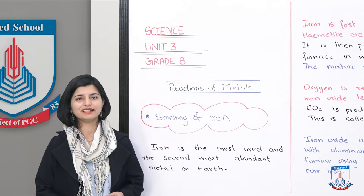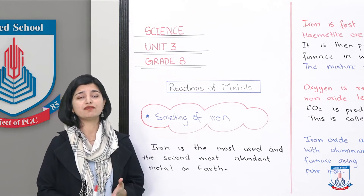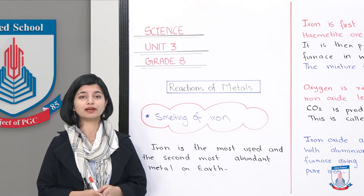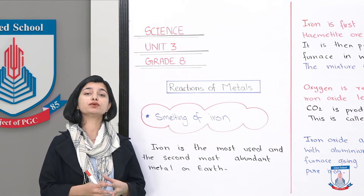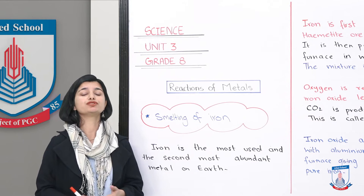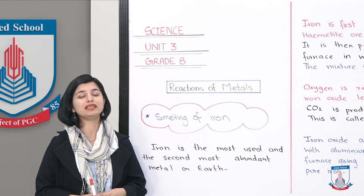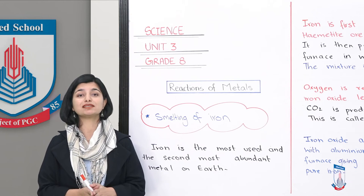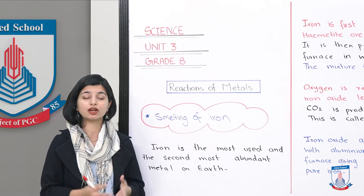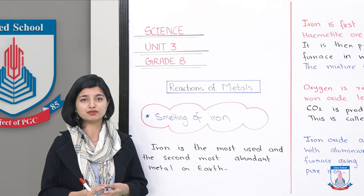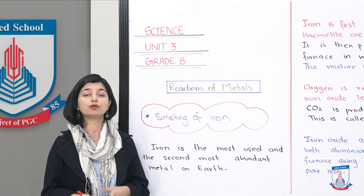As we have understood, the process of extracting metals is a very long process. A lot of money, effort, and science and technology are used. We discussed electrolysis in the first lecture — using a current flow through electrodes in solution to extract metal. We studied aluminium as an example. Today we discuss the second process for less reactive metals. Less reactive metals form unstable compounds, so you don't need electrolysis — you can use smelting instead.